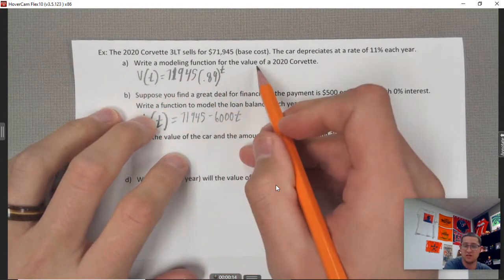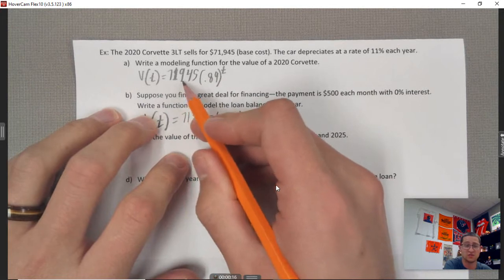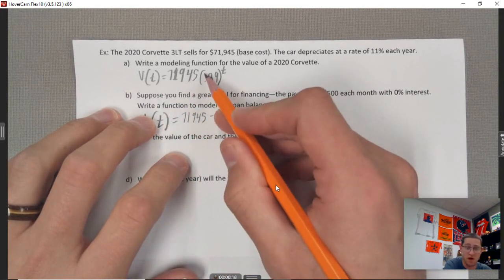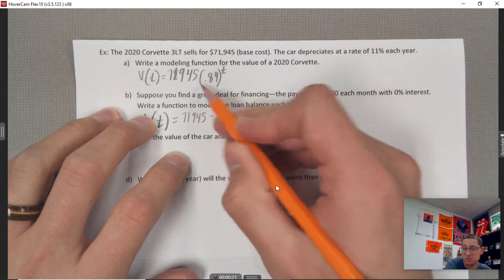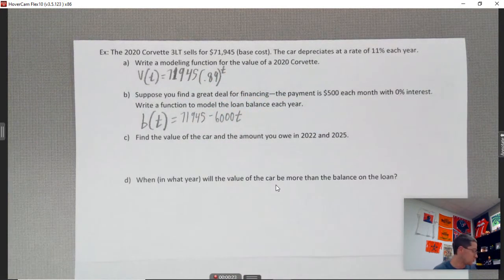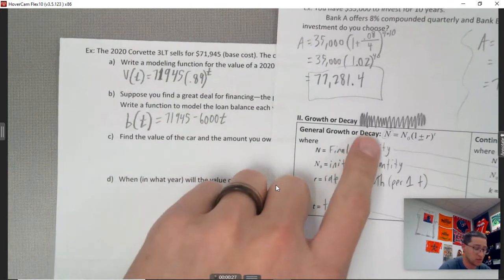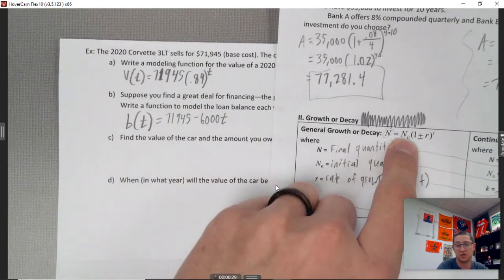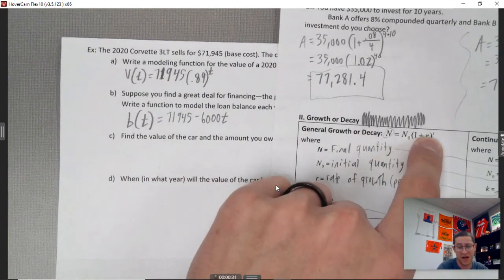V of t is the value of the Corvette. Notice it's 71,945, you've got 1 minus 0.11 which ends up being 0.89, and then you have your t. What we're doing just to show you is we're doing that general decay function - you got your initial value, we're subtracting the rate per time.